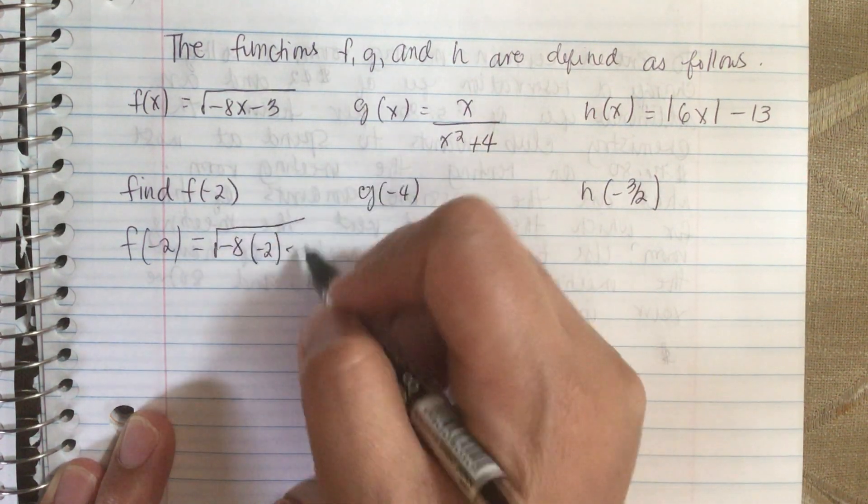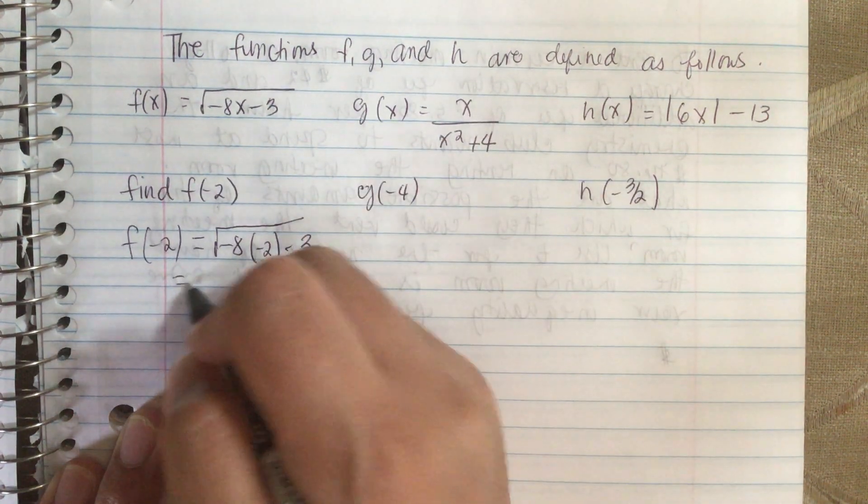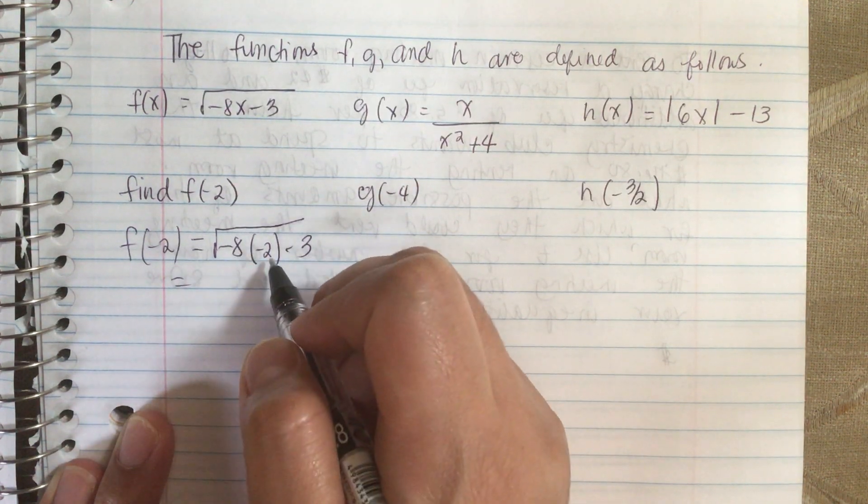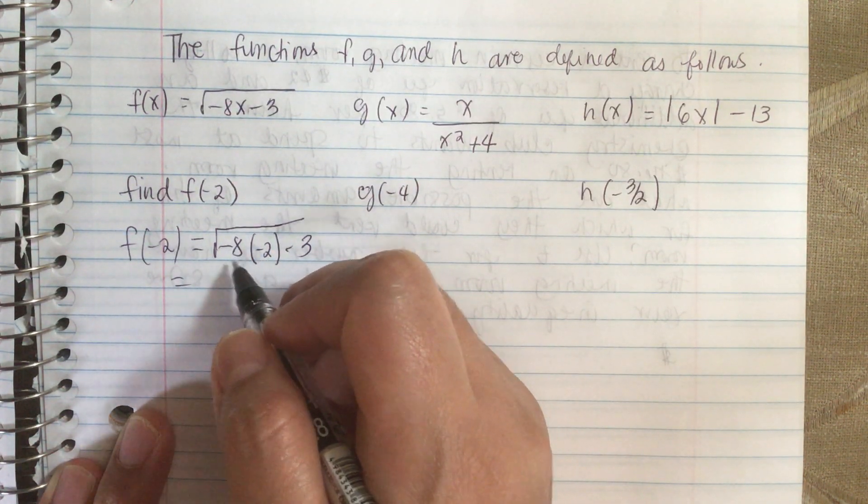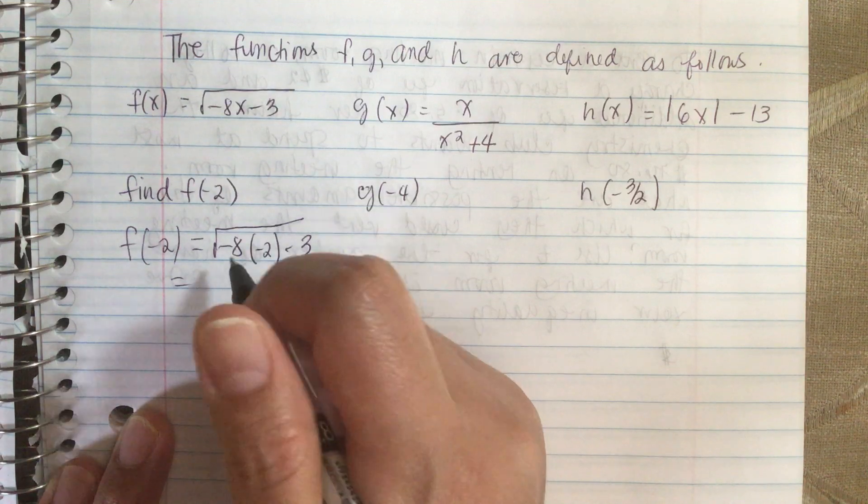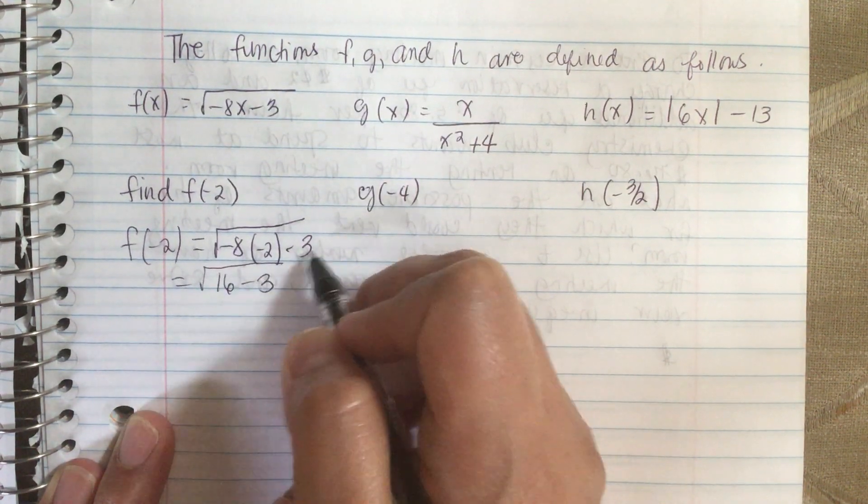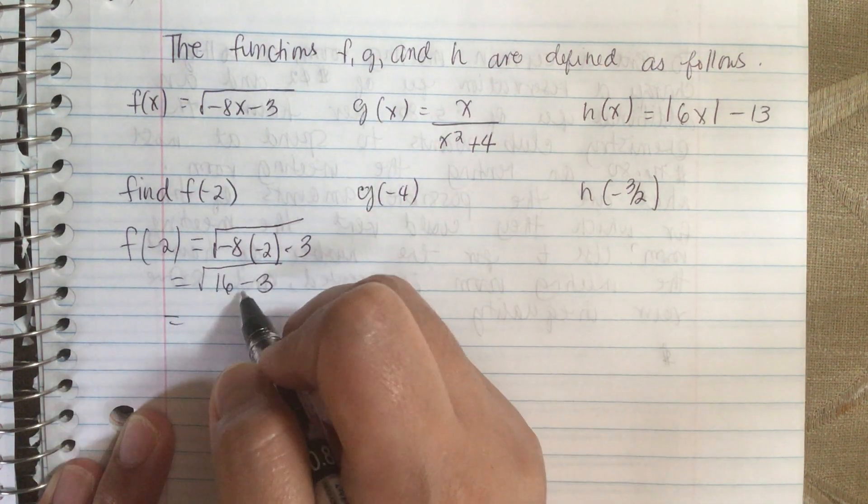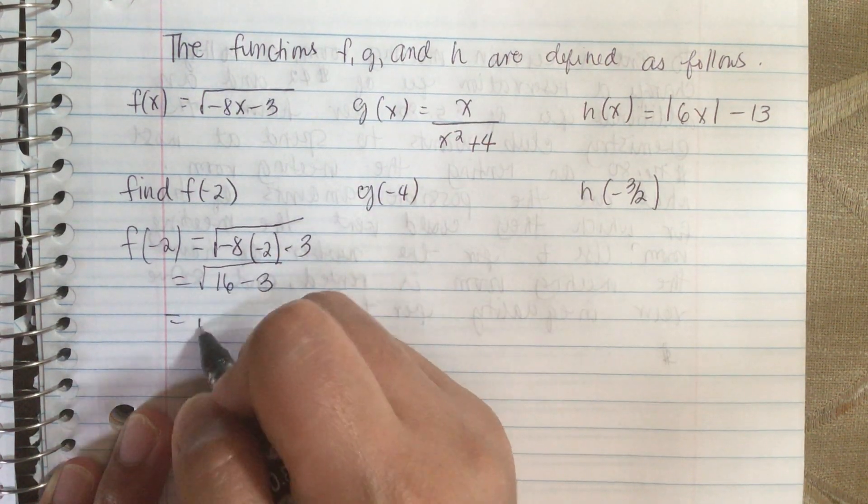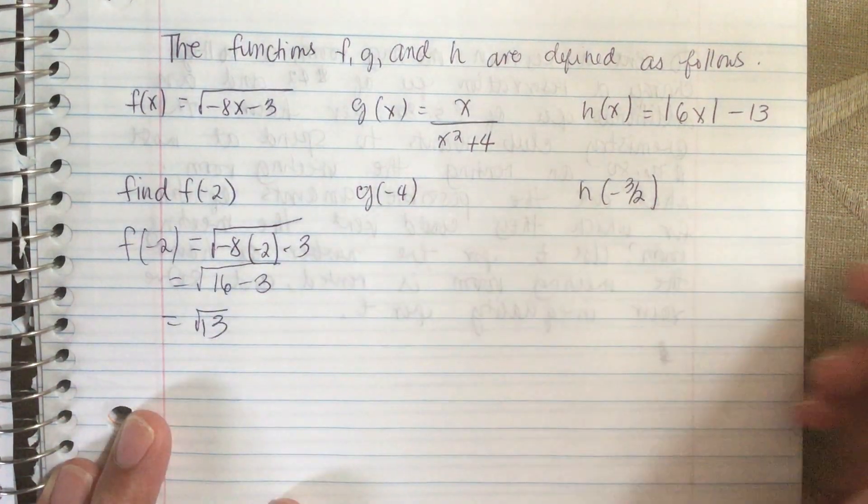and then minus 3. So 8 times 2 is 16, and there are two minus signs, so it's positive 16 minus 3. And 16 minus 3 is square root of 13.